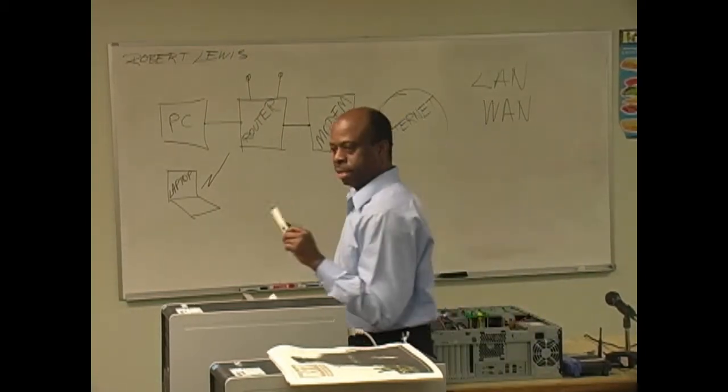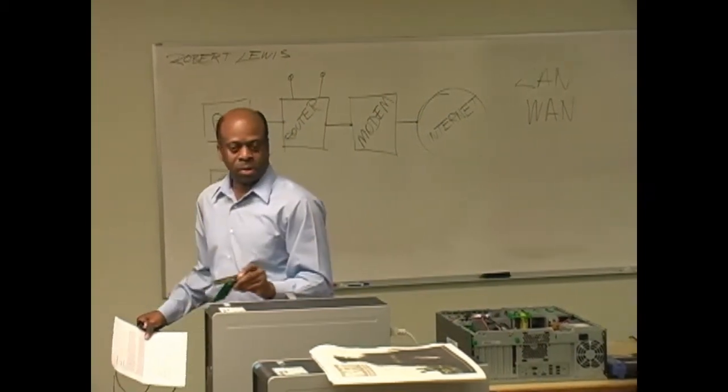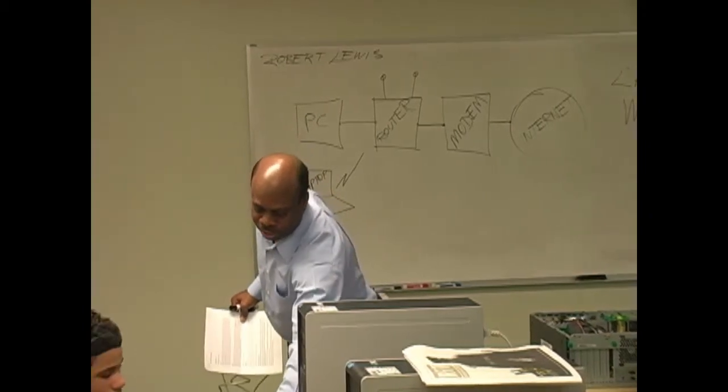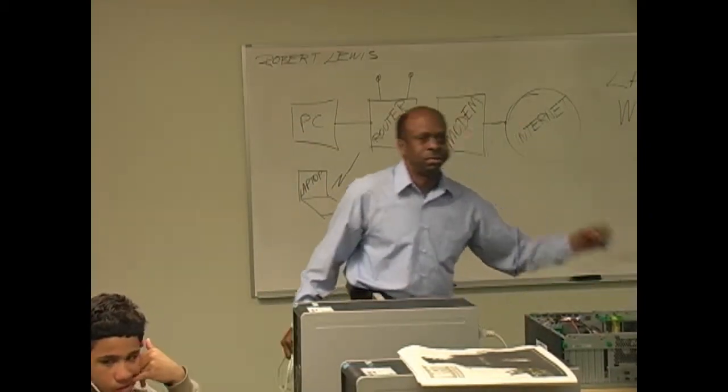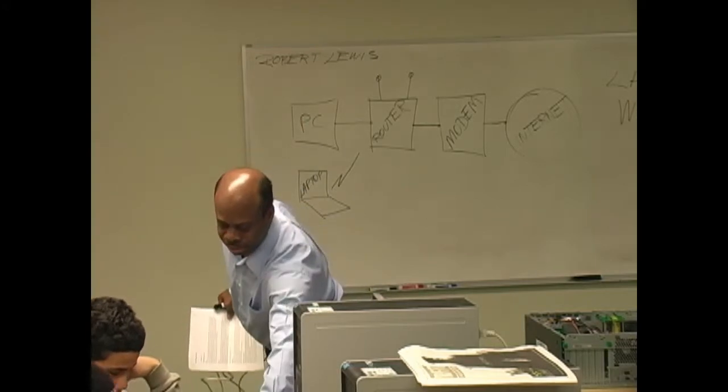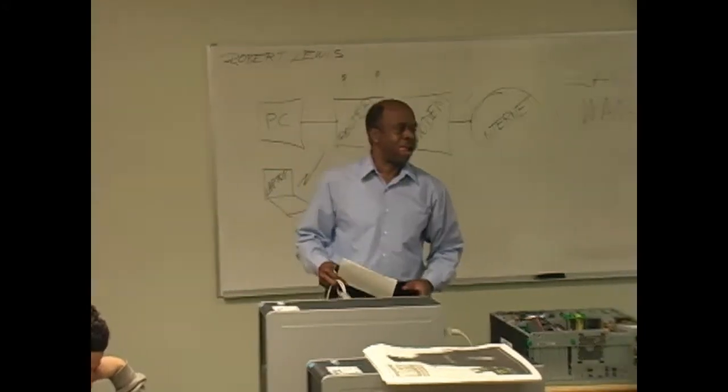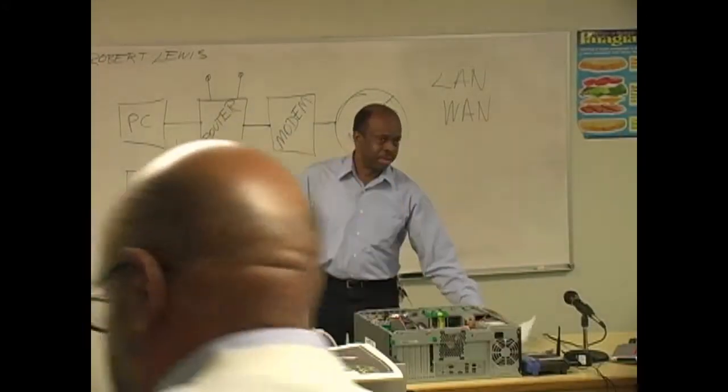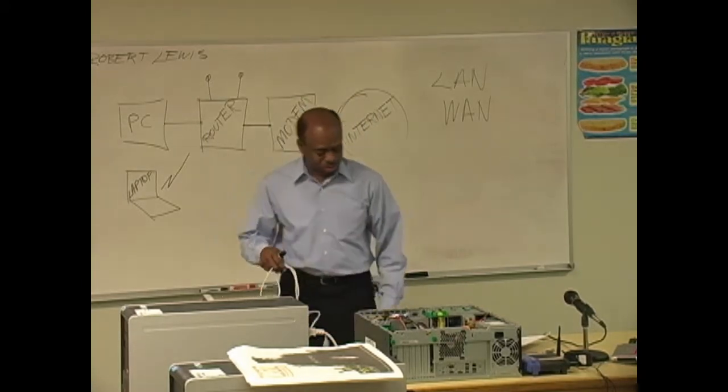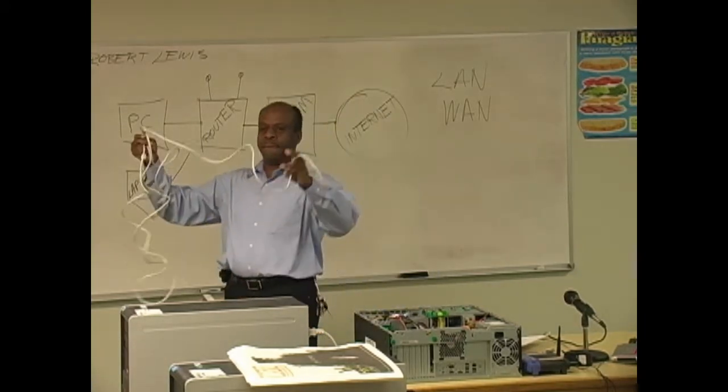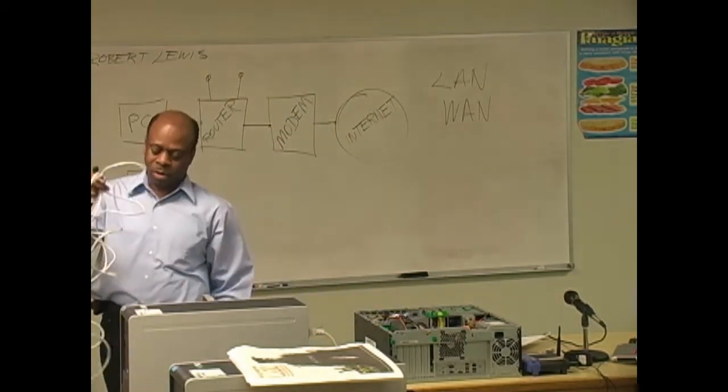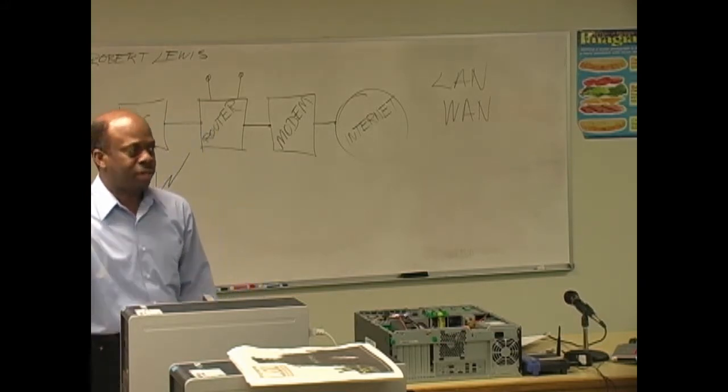So what I'm going to do is pass these three pieces around. That's a PCI network interface card, this is a USB network interface card. Later on I'll have you look at them and you can determine and tell me which is which. Here's some patch cables, some of you built these before. We're going to do it again.